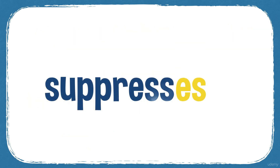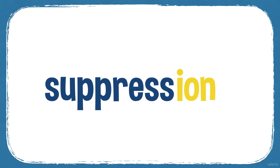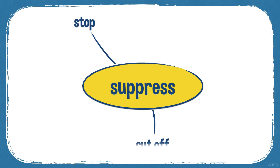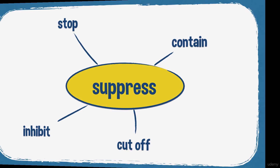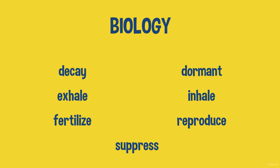You can suppress the immune system, suppress the appetite if you don't want to eat so much. Treatment sometimes suppresses the functions of your body, and drugs suppress things — drugs can suppress the growth of cancer cells. Word forms: suppress, suppresses, suppressing, suppressed, suppression. Synonyms: stop, cut off, contain, and inhibit.